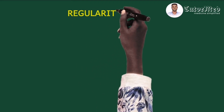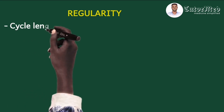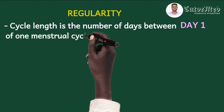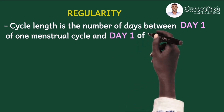After frequency, the next question is regularity. To determine whether a patient has a regular menses, you need to know the length of your menstrual cycles. Your menstrual cycle length is the number of days between day one of one menstrual cycle — remember, day one is the first day of the bleed — and day one of the next menstrual cycle.